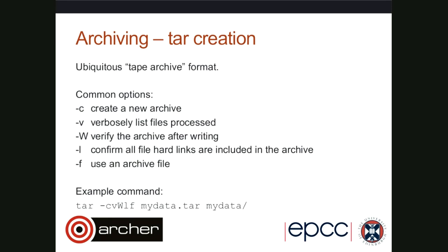-w will verify the archive after writing, making sure nothing has become corrupted and all the data is there. -l confirms that all file hard links are included in the archive and outputs a warning if not. And -f tells TAR that the next argument is the name of the archive file you want — if you don't include this option, it will just print to standard out. Here is an example command combining all of these options: this will take all the data in the directory MyData and archive it in a file called MyData.tar.